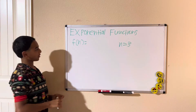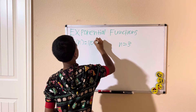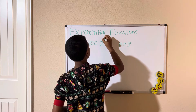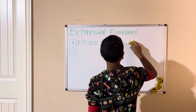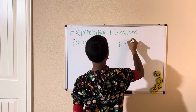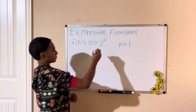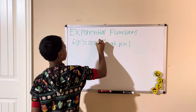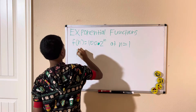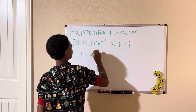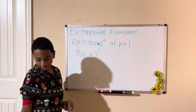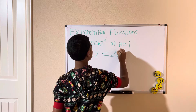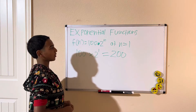Let's do another example. We have f of n equals 100 times 2 to the power of n, at n equals 1. We evaluate it: 100 times 2 to the power of 1. Two to the power of 1 is simply 2, and 100 times 2 is 200. That's what you get when you evaluate this function.